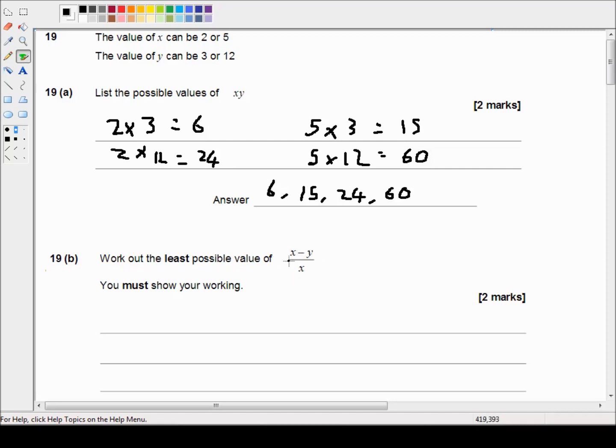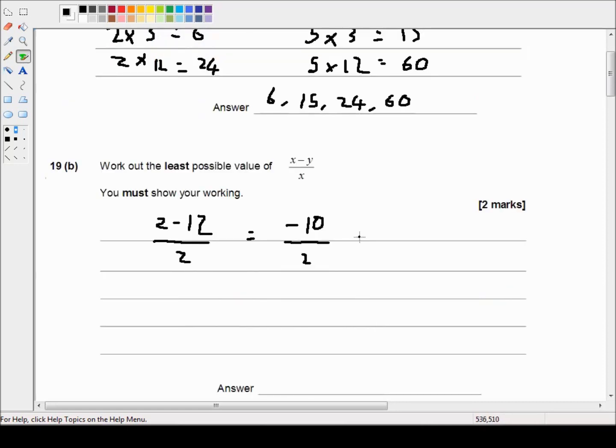So what we're looking for is a really big negative number. We want the biggest gap between x and y possible with the largest value for y and the smallest value for x. So that would be 2 minus 12 over 2 which equals negative 10 divided by 2 which equals negative 5.